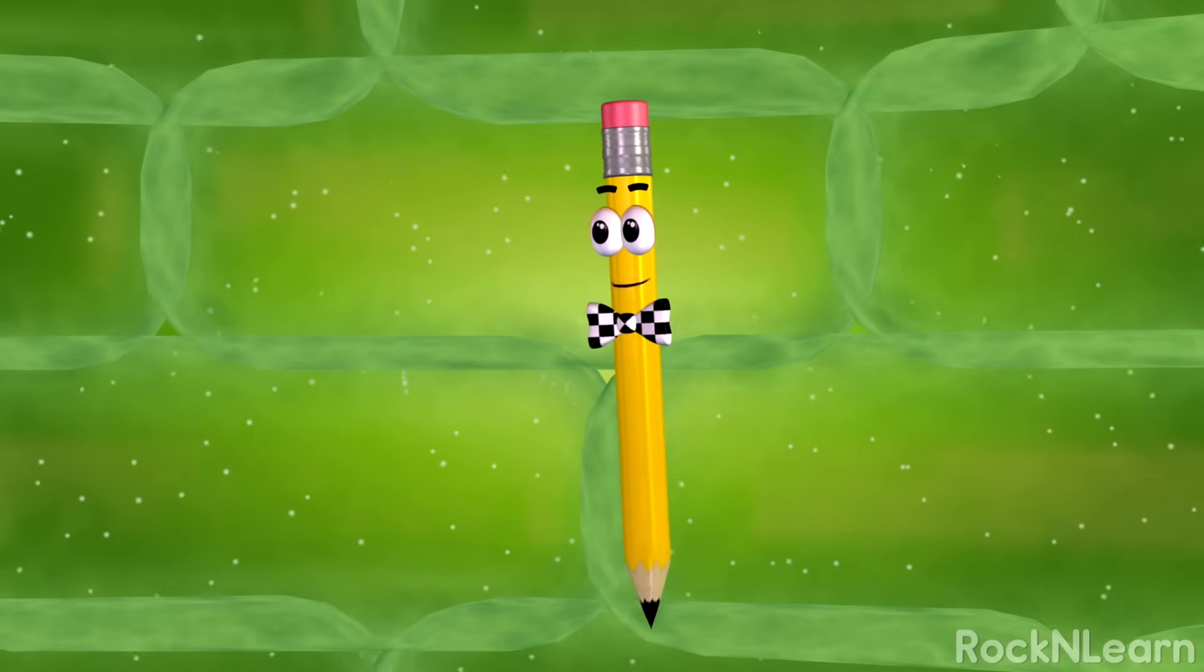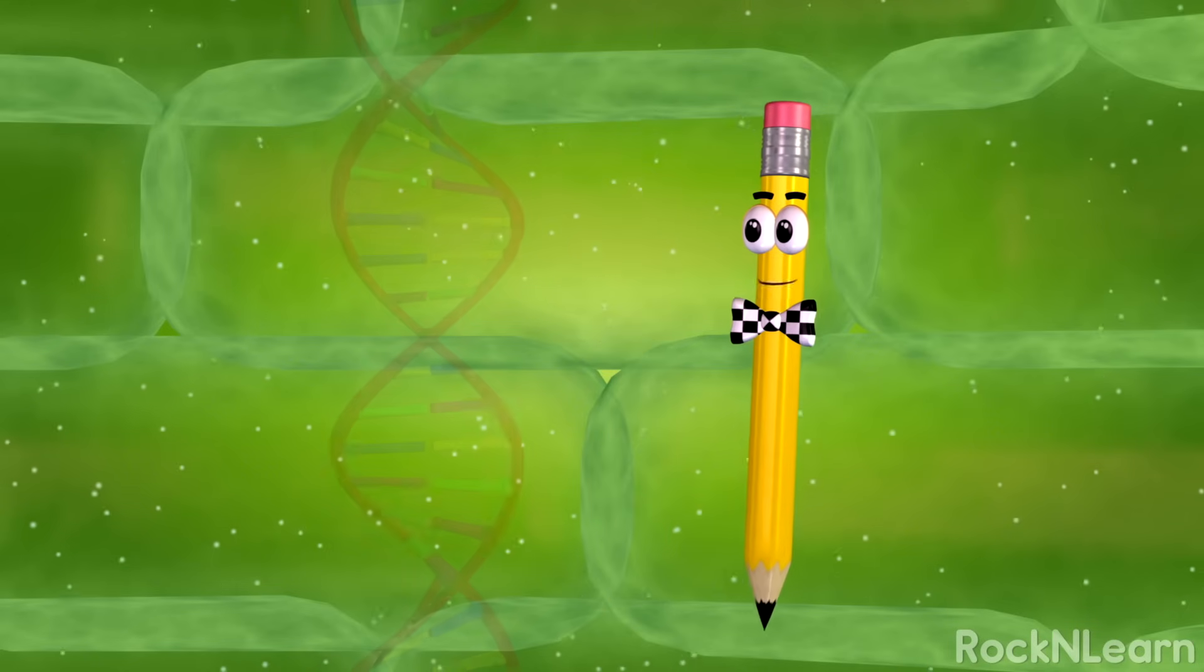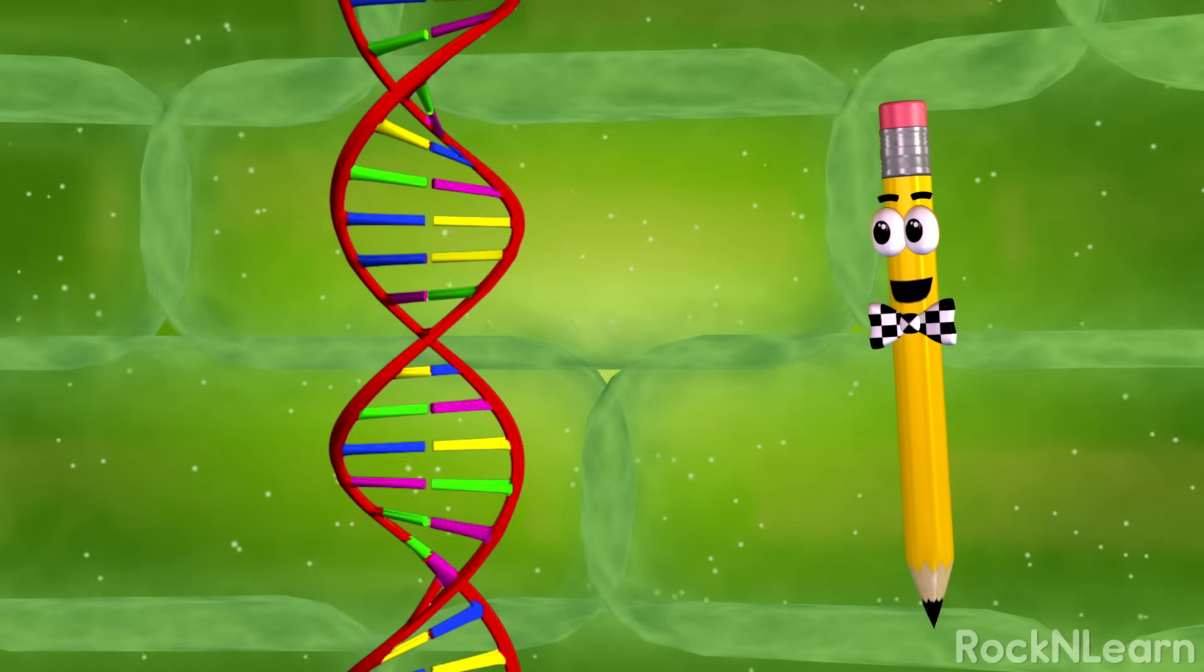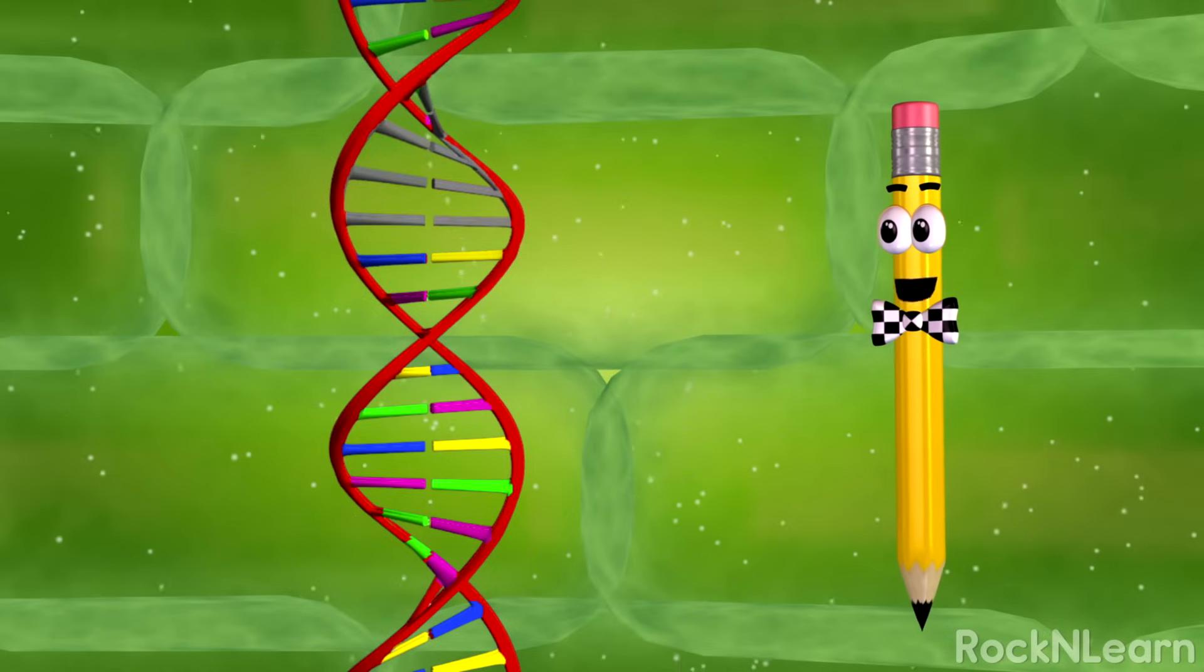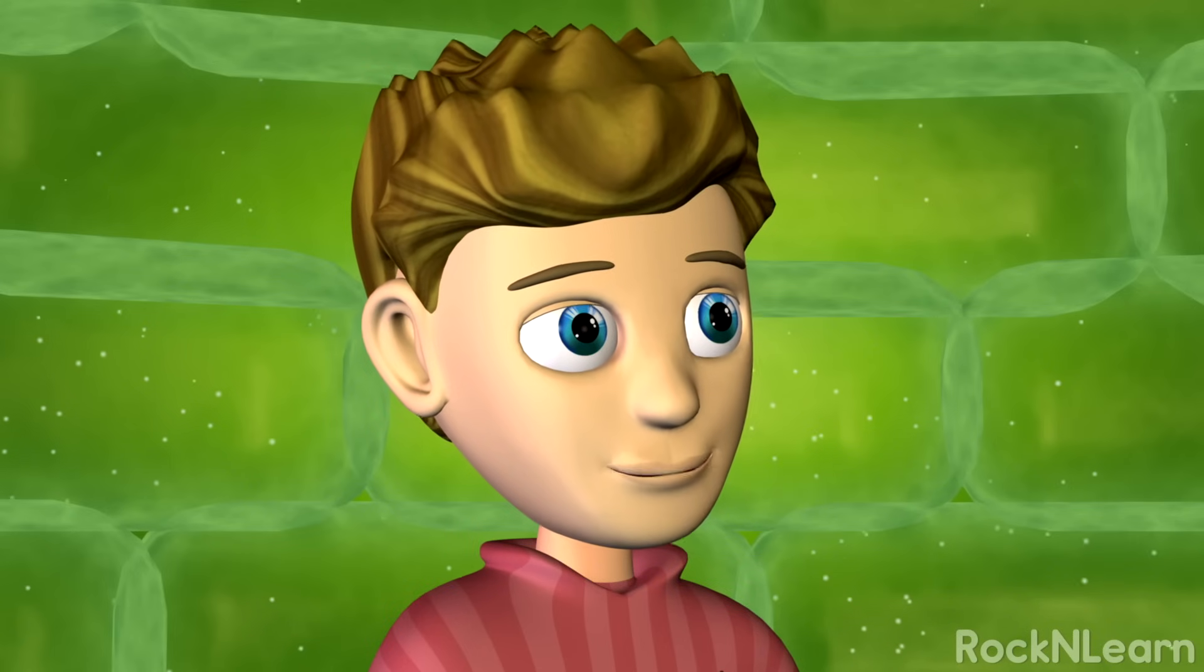But there are many different types of cells. How can that be? Each type of cell is able to perform a different function because certain parts of the genetic instructions are turned off, and others are turned on. Now I see why it's called the control center.